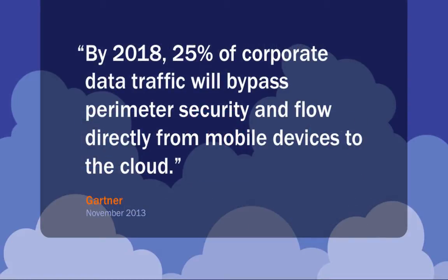Gartner has a pretty good stat here: by 2018, almost 25% of all corporate traffic will essentially subvert traditional perimeter firewalls and next-generation threat prevention that is predicated on seeing the traffic. I think that number is actually a little bit low, especially as 3G and 4G roll out and pervasive, ubiquitous Wi-Fi allows people to connect anywhere at any time.